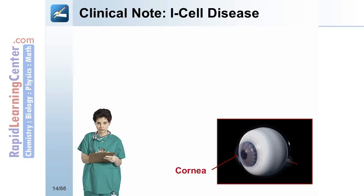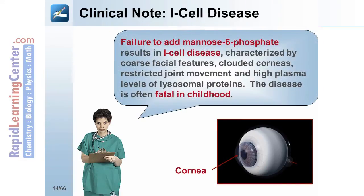Failure to add mannose-6-phosphate results in I-cell disease, or inclusion cell disease, characterized by coarse facial features, clouded corneas, restricted joint movement, and high plasma levels of lysosomal proteins. The disease is often fatal in childhood.